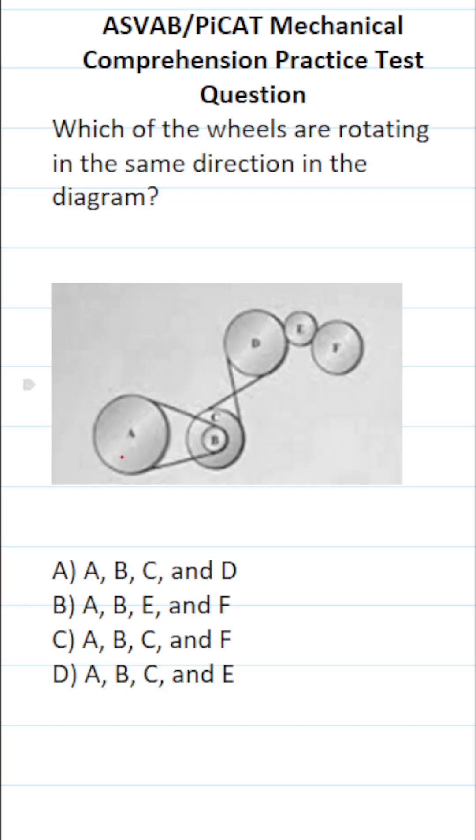So let's say A is spinning this way. That means that this pulley is spinning in this direction. That means wheel B is also spinning in the same direction as A. So again, all of them have A, B in the answer choice, which is correct.